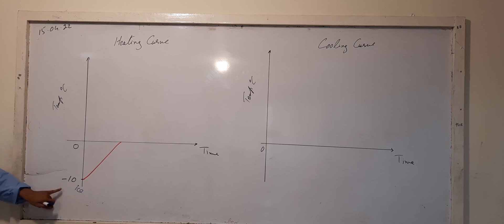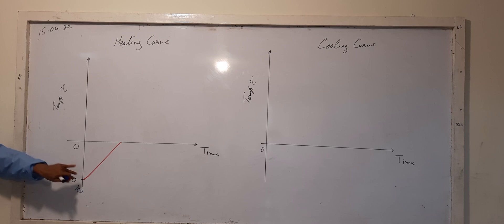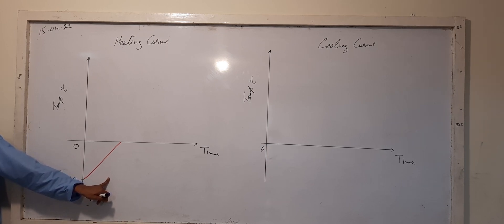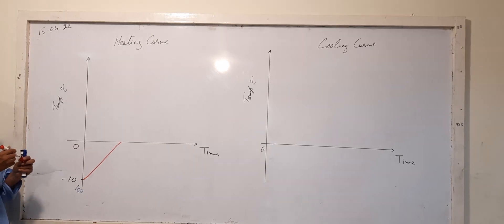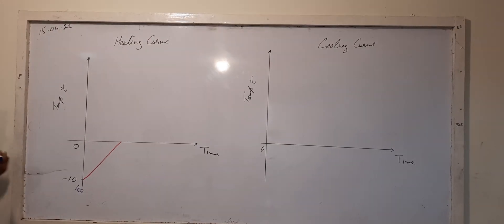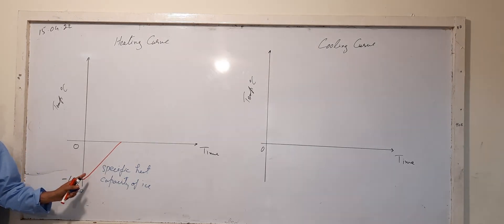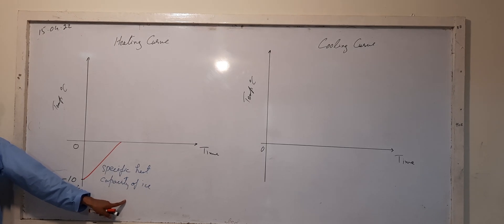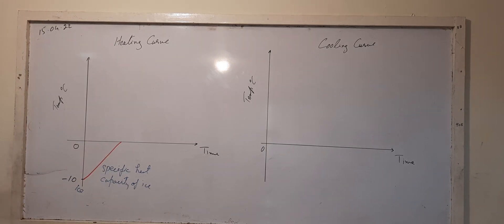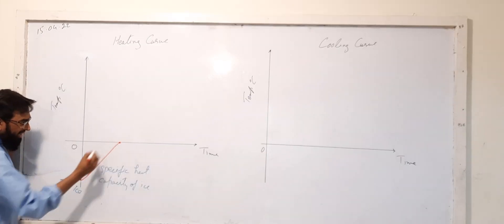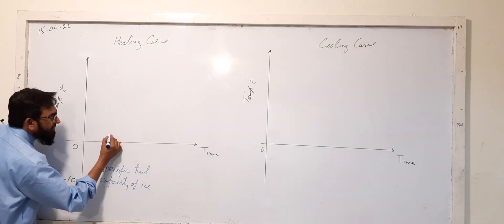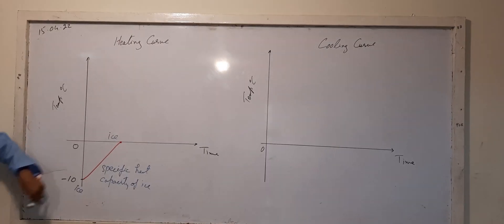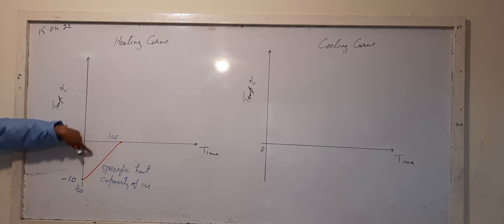As the temperature of ice increases from minus 10 degree Celsius to 0 degree Celsius, to find out the heat during this process, we apply the specific heat capacity formula — specifically the specific heat capacity of ice. At 0 degree Celsius, it is still ice. The state has not changed here; only the temperature is increasing.